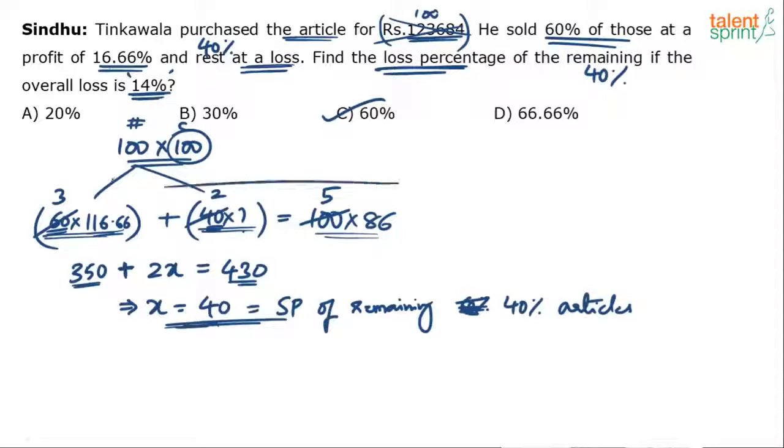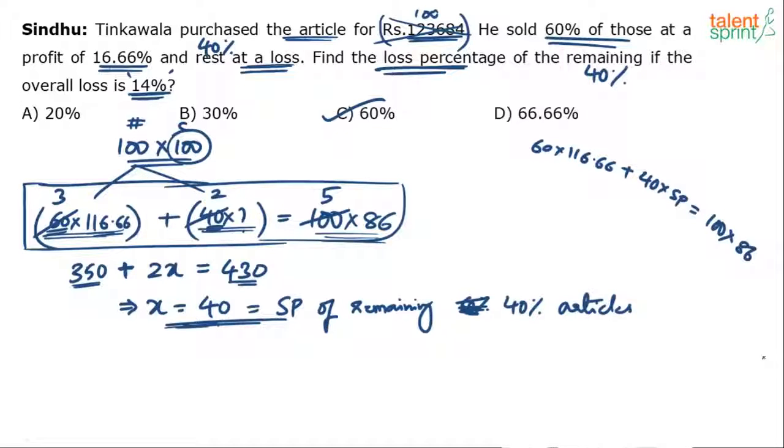So just one equation. This is the equation that you have to write. Very simple. Very easy to frame this equation. And we have solved such questions in the past multiple times. Write the correct equation. 60% were sold at profit of 16.66, so it becomes 116.66. Remaining 40% were sold at what selling price? So that overall for all the 100 articles, the loss is 14%. Solve for the selling price. Once you get the selling price, you will know what the loss percentage is or what the profit percentage is. That's it.